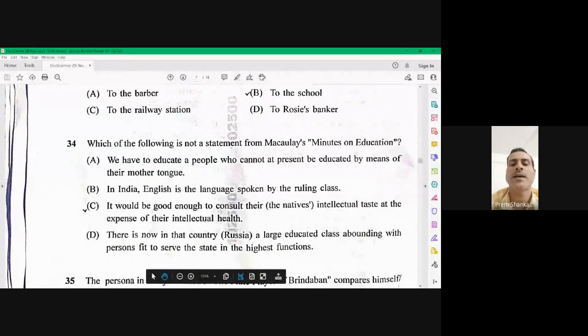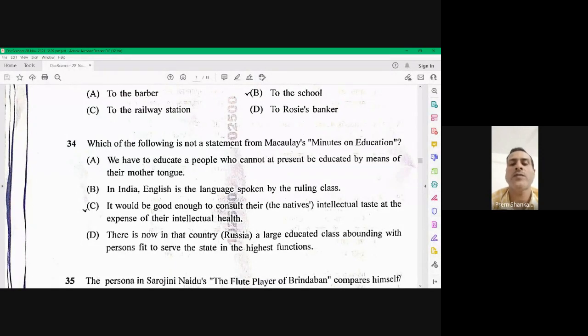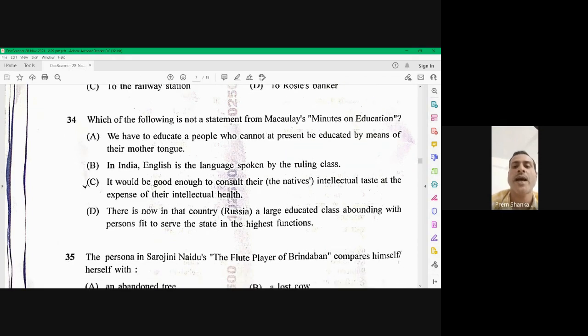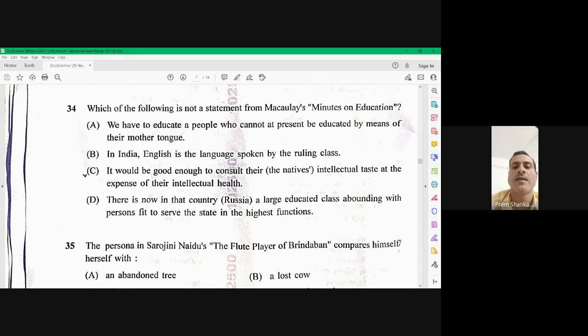Otherwise, he has lots of thinking and finally decided to go and sit on the bank of Saru river. But here Saru is not given as the option. So to the barber is the right answer here. Question number 34, which of the following is not a statement from Macaulay's minute on education? So the right option here is option number C. It would be good enough to consult their natives intellectuals taste at the expense of their intellectual health. So 34 C is the right option.